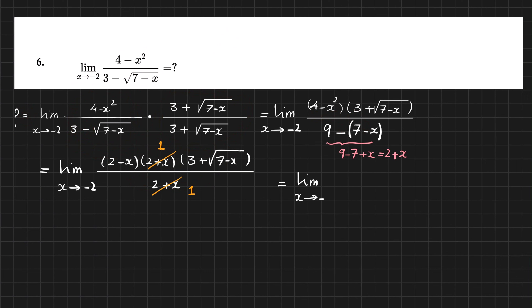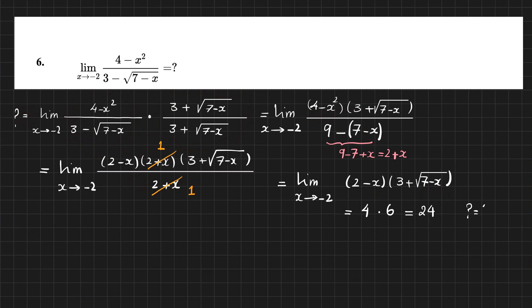Now I substitute x equals minus 2: the numerator becomes 2 minus (minus 2) equals 4. The denominator: root(7 minus (minus 2)) equals root of 9 equals 3, so 3 plus 3 equals 6. The answer is 4 times 6 equals 24. So the answer to this problem is 24.